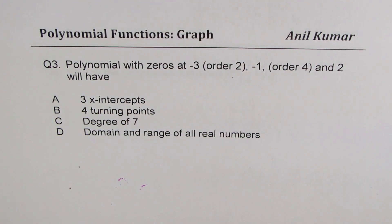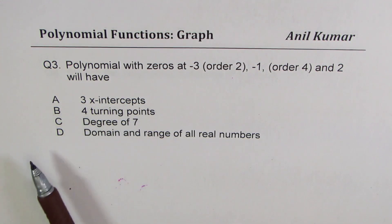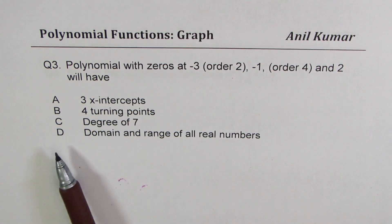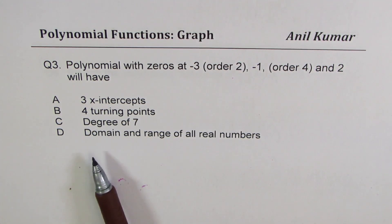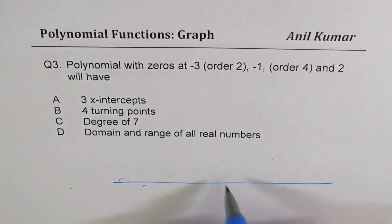Question number 3: A polynomial with zeros at minus 3 (order 2), minus 1 (order 4), and 2 will have: 3 x-intercepts, 4 turning points, degree of 7, domain and range of all real numbers. You can pause the video, answer this question, and then look into my suggestions.